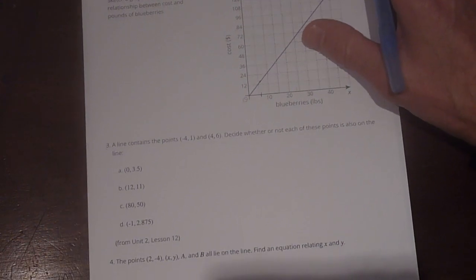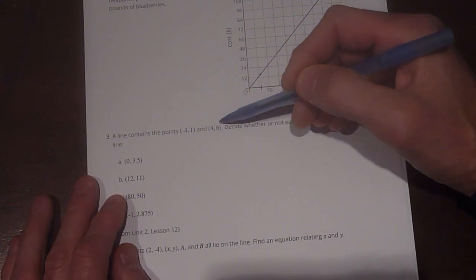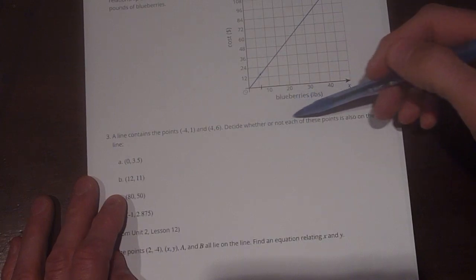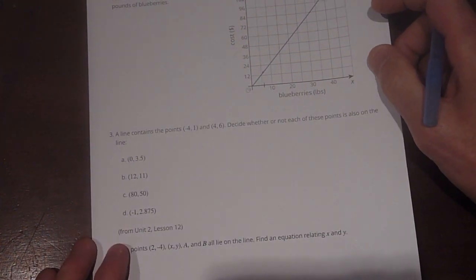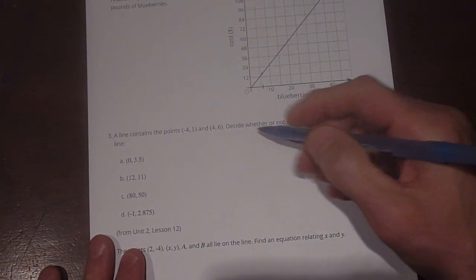Number 3 says a line contains points (-4, 1) and (4, 6). Decide whether or not each of these points is also on the line. Okay. So the first thing we can do is we can find the equation for that line by using our slope formula.